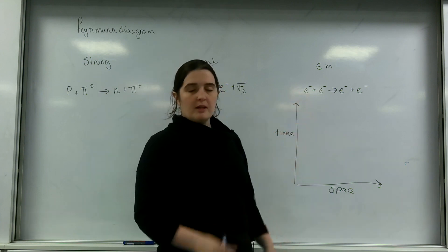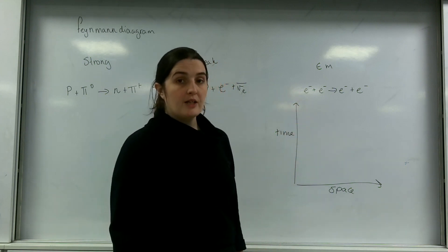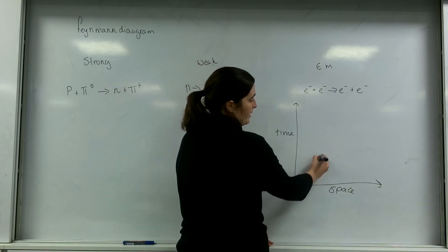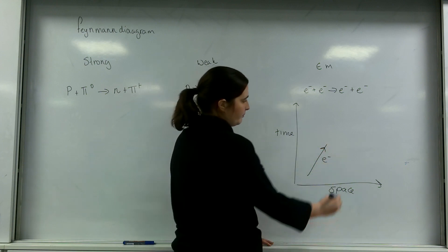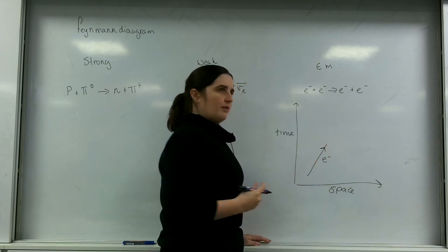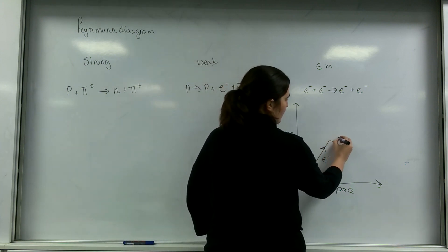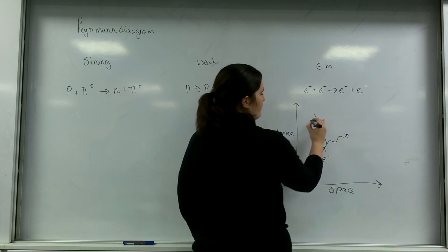I'm going to take this electromagnetic interaction and remind you that the exchange particle for an electromagnetic interaction is a virtual photon. An electron comes in and a virtual photon takes some of its energy away, and this electron would move off in a different direction.